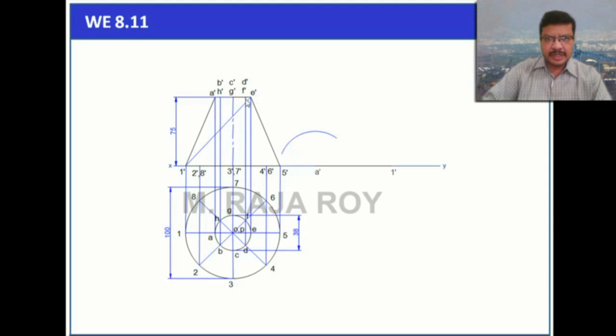Then this 1 dash to E dash. This particular length you take with compass, 1 dash as center, draw another arc. This intersection point is E dash, that means this point.